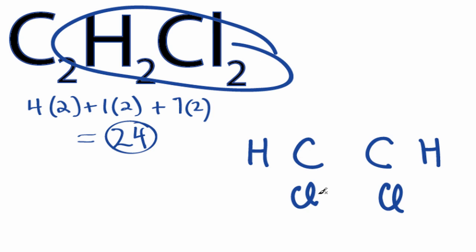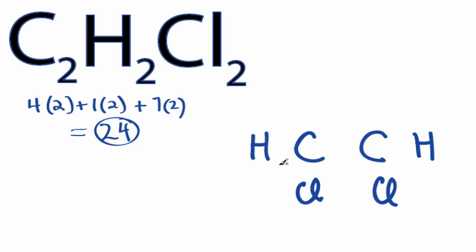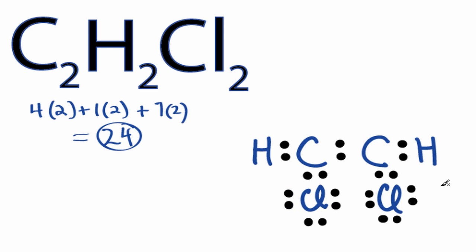So let's go with this arrangement. We have 24 valence electrons for the C2H2Cl2 Lewis structure. We'll put 2 electrons between atoms to form chemical bonds. So we've used 10, then around the chlorines, 12, 22, and back to the central carbons, 24. We've used all 24 valence electrons.